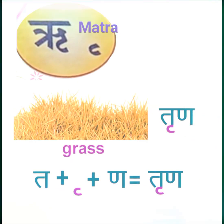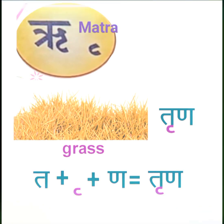Next, if we add re-matra to the word ta, ta becomes trh. Add na — trh. Trhna means grass.